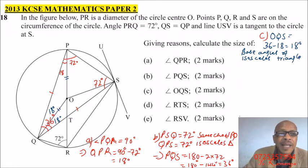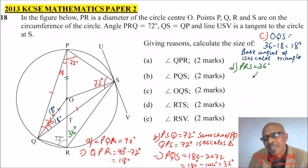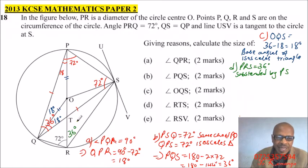Then we have D here. We are supposed to get RTS. Now, with RTS, we know PRS is the same as 36 degrees. Why? Because PS subtends this angle that is PQS and subtends the same. So angles subtended by the same chord are equal. So we say, PRS is equals to 36 degrees, subtended by PS.